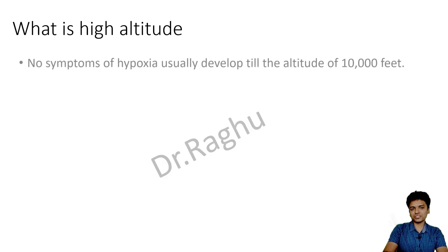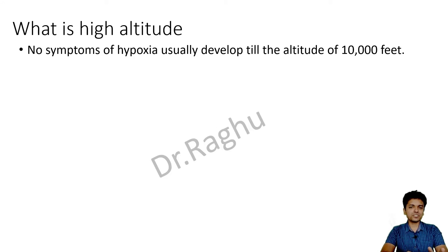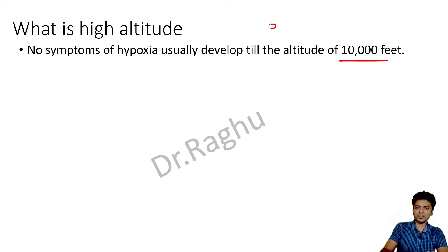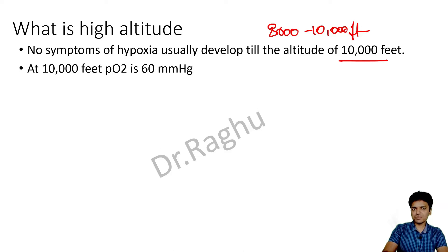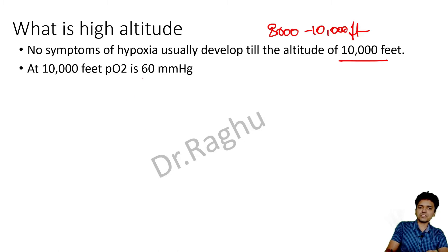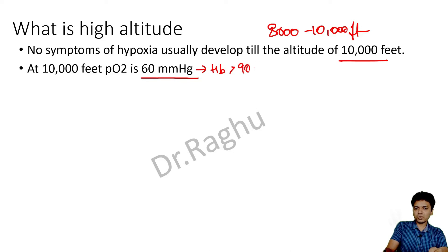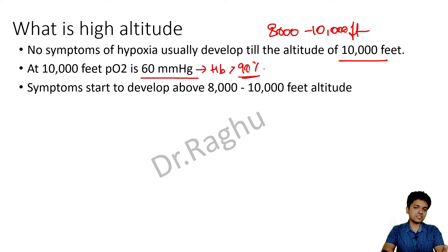What is the meaning of high altitude? Usually no symptoms of hypoxia develop till an altitude of around 8,000 to 10,000 feet. Even at 10,000 feet, the partial pressure of oxygen is 60 mmHg, and if you recall the oxygen-hemoglobin dissociation curve, even at 60 mmHg, hemoglobin is more than 90% saturated — that's why no symptoms of hypoxia appear.